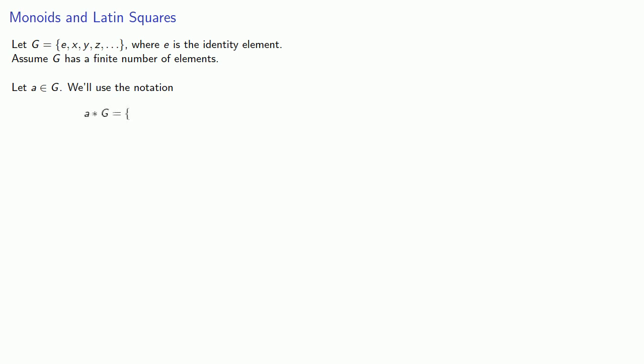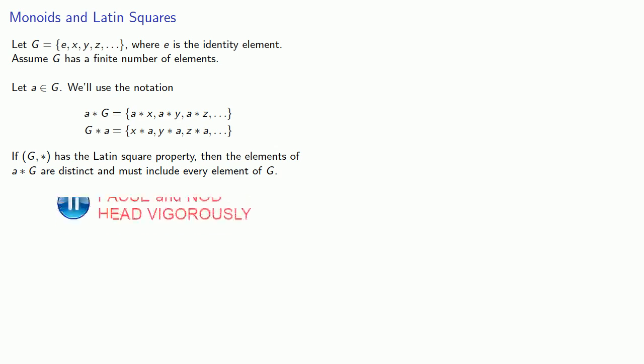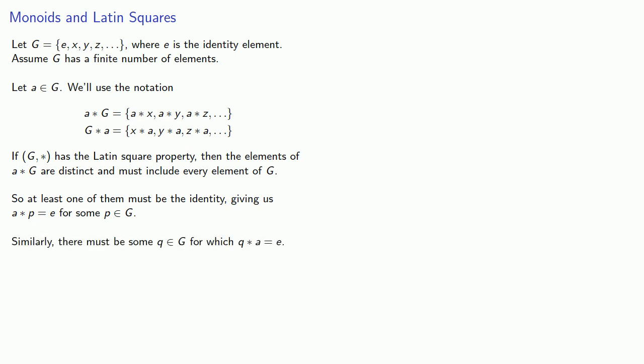We'll use the notation A-star G to be the set A-star X, A-star Y, and so on. In other words, we're going to left multiply every element of G by A. And we'll define G-star A to be where every element of G is right multiplied by A. If G-star has the Latin square property, then the elements of A-star G are distinct and must include every element of G. And so at least one of them must be the identity, giving us A-star P equal the identity for some element P in G. And similarly, there must be some element Q in G for which Q-star A gives us the identity element.